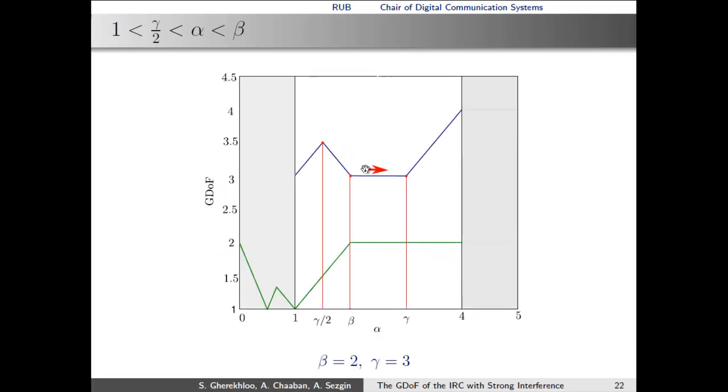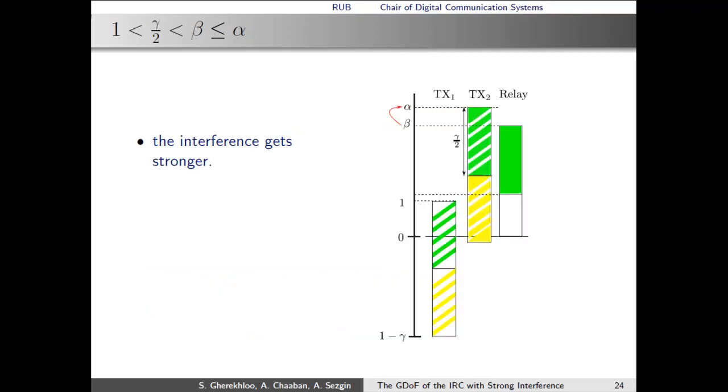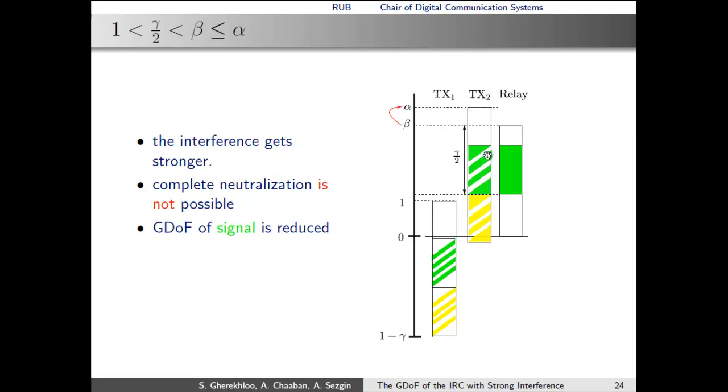In this regime, the interference is so strong that we are not able to send any gray signal, as well as neutralize all the interference. Thus, the green signal has to be reduced to enable interference neutralization. This is shown here. So, alpha is now larger than beta. In order to apply interference neutralization, we have to reduce the size of this block here. Now, the blocks can be moved down, leaving some empty space in order to send a blue signal, by utilizing interference cancellation at the receivers. Overall, as the size of the blue plus the green block stays the same size of gamma over 2, the GDoF stays constant.